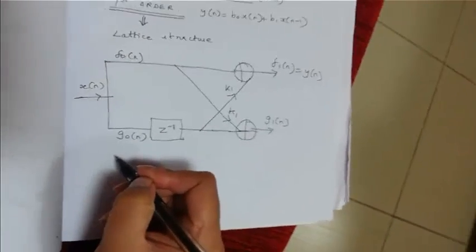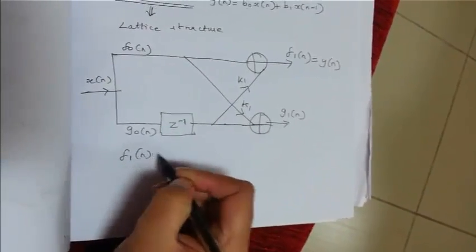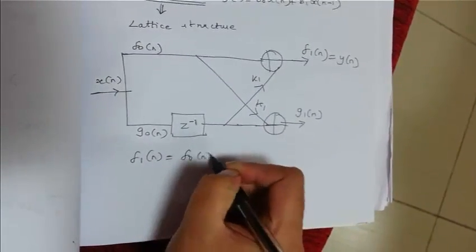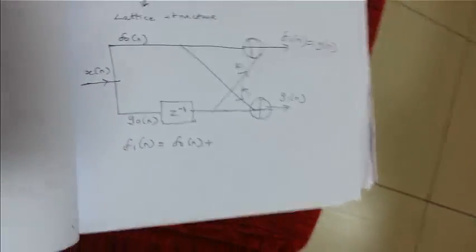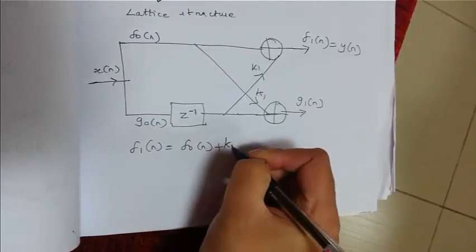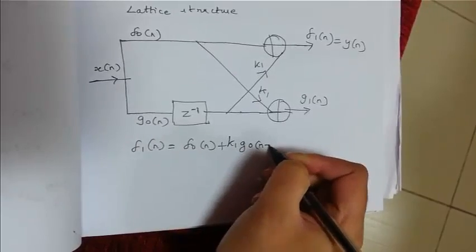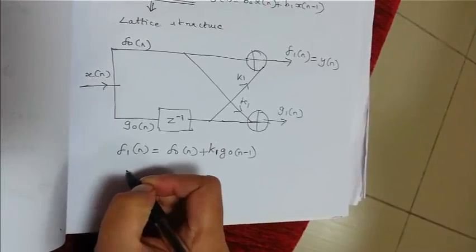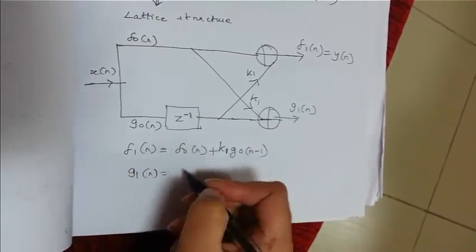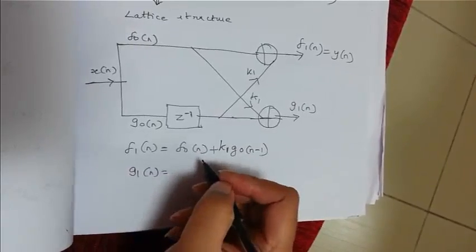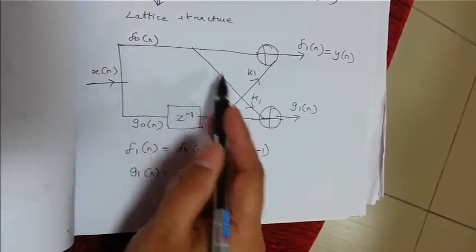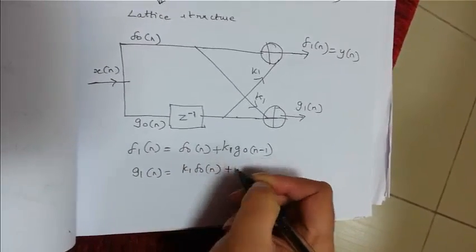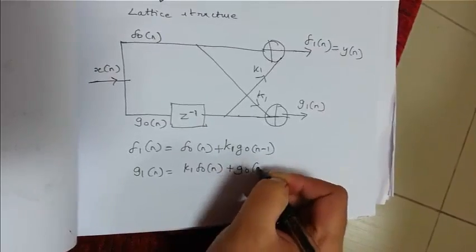So now what is our objective? Our objective is to bring Y of N in terms of X of N and to find the reflection coefficient K1. For that we have to write the expression of F1 of N. F1 of N is F0 of N plus K1 G0 of N minus 1. And G1 of N is K1 F0 of N plus G0 of N minus 1.